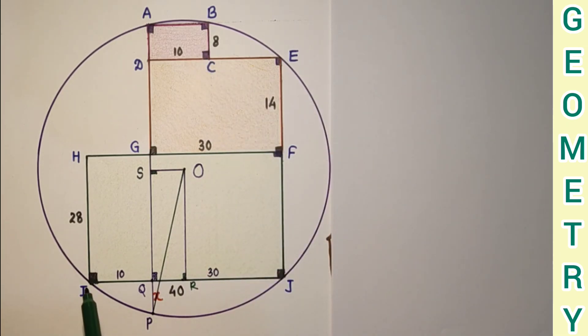So by chord intersecting property, IQ times QJ is equal to AQ times QP. And QP is X, we have already assumed.